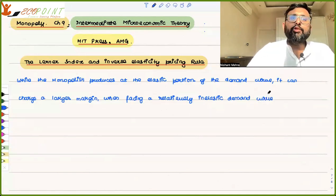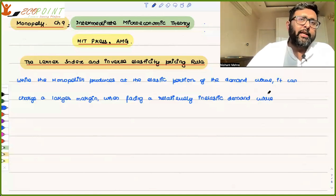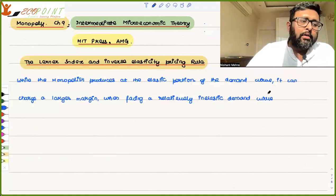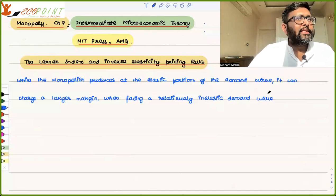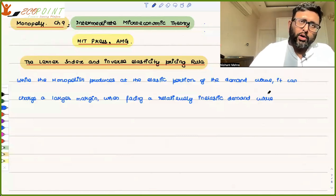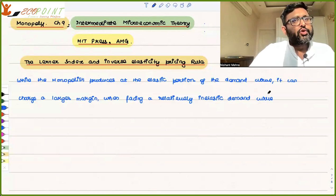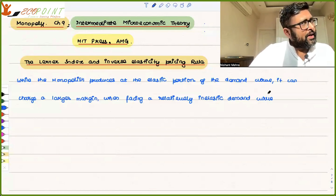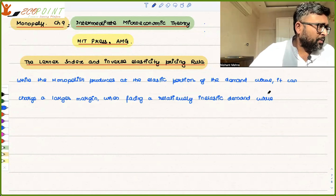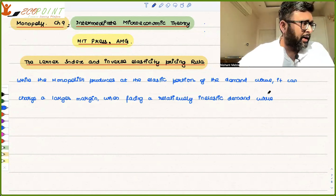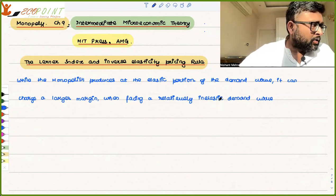When the monopolist is going to face a relatively inelastic demand curve, it means that consumers do not have many substitutes available. And because consumers do not have many substitutes, they will be willing to pay even higher prices for the monopolist's product.